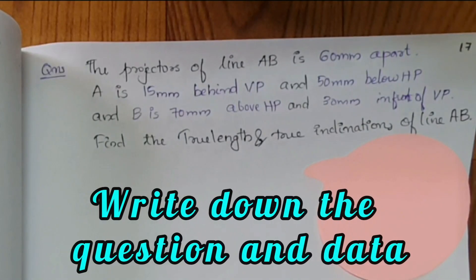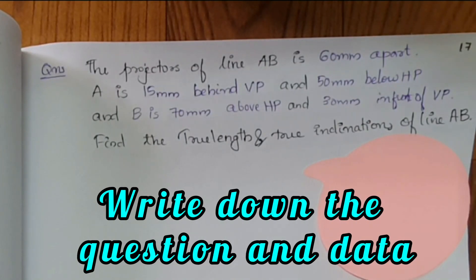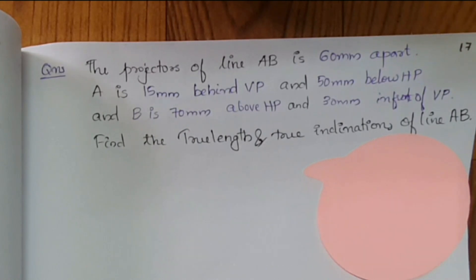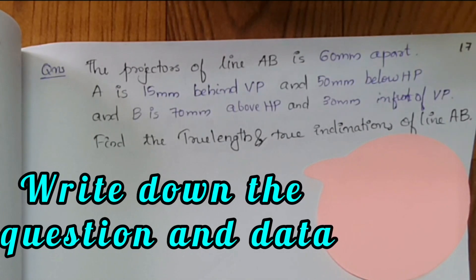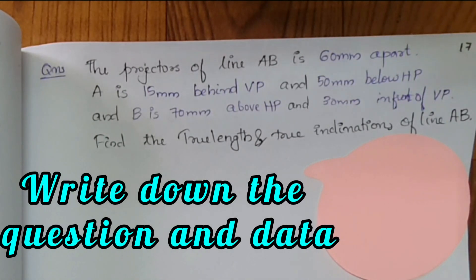First question: Projectors of line AB are 60 mm apart. Point A is 15 mm behind VP and 50 mm below HP, and B is 70 mm above HP and 30 mm in front of VP. Find the true length and true inclinations of line AB.